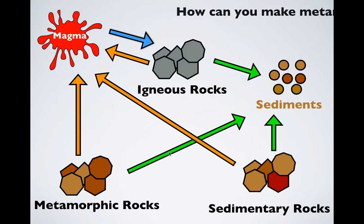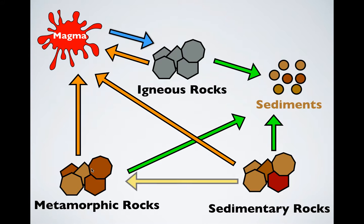How can you make metamorphic rocks? You can apply heat and pressure to an igneous rock or a sedimentary rock, and that will turn it into a metamorphic rock.